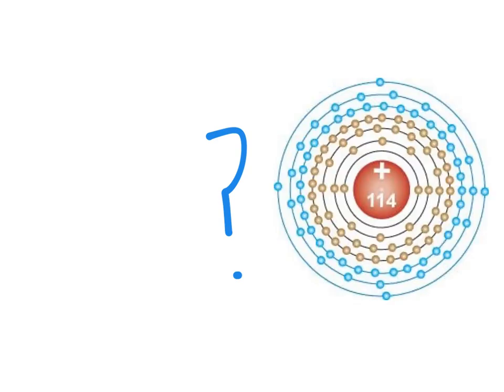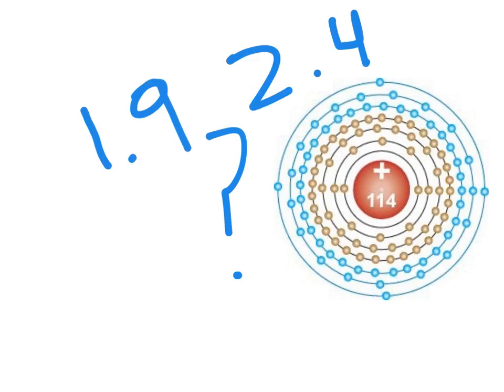Despite these predictions, when element 114 was discovered in 1998, it was found to not be terribly stable, with a half-life of only 1.9 to 2.4 seconds, depending on different sources.